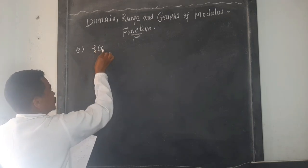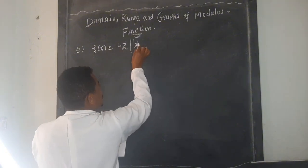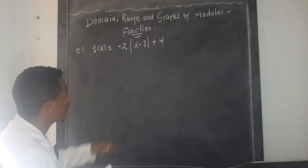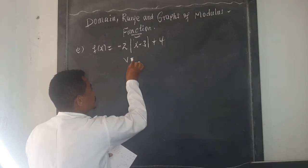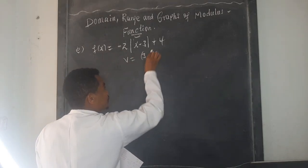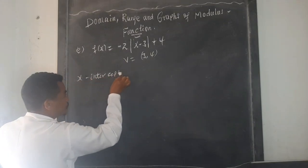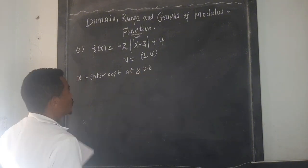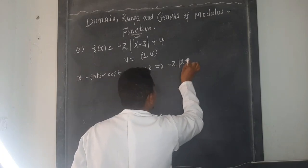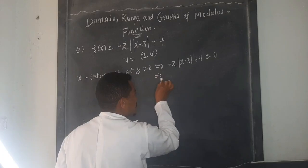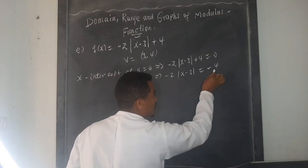Part E: f(x) = -2|x - 3| + 4. The graph opens downward because the coefficient is negative. The vertex is at (3, 4). For the x-intercept, set y = 0: -2|x - 3| + 4 = 0, so -2|x - 3| = -4. Dividing both sides by -2 gives |x - 3| = 2.